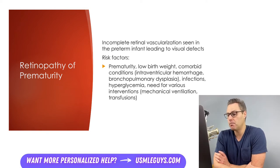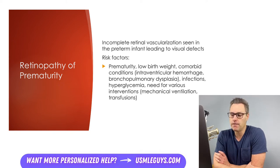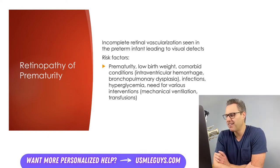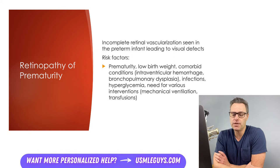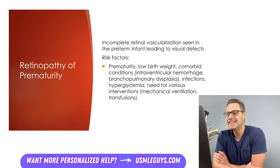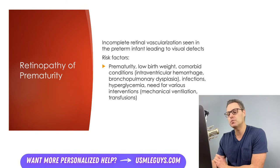There are a number of risk factors for retinopathy of prematurity, with prematurity being the most important. There are dozens of other associated diseases, treatments, and comorbidities that are implicated. Rather than memorize every single risk factor, in general, patients who are premature or those who are ill enough to require intensive interventions, those who have severe lab abnormalities, or those with very serious comorbidities or infections are all at increased risk. Alterations in growth factors associated with neovascularization, such as vascular endothelial growth factor and insulin-like growth factor 1, can also be implicated in this condition.